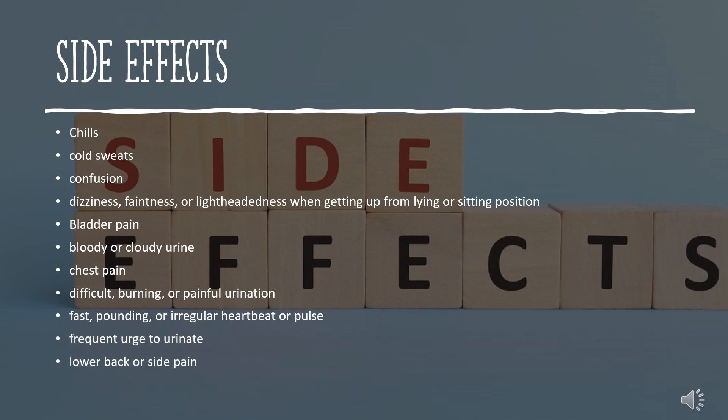Side effects of Irbesartan use can include: chills, cold sweats, confusion, dizziness, faintness, or lightheadedness when getting up from a lying or sitting position, bladder pain, bloody or cloudy urine, chest pain, difficult, burning, or painful urination, fast, pounding, or irregular heartbeat or pulse, frequent urge to urinate, and lower back or side pain.